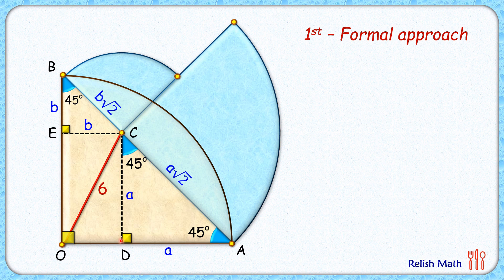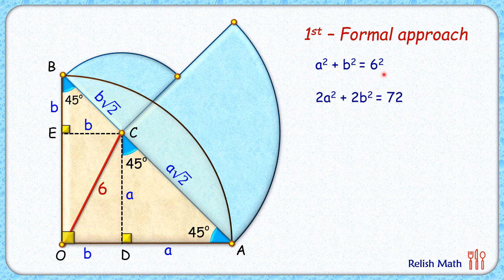OD length will be the same as 'b' centimeters. Looking at triangle COD and applying the Pythagorean theorem, we get a² + b² = c², which is 36. Multiplying both left-hand side and right-hand side by 2, and writing 2 as (√2)², the left-hand side terms become (a√2)² + (b√2)² = 72.